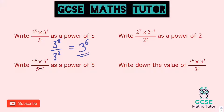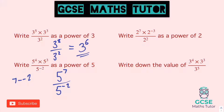Five to the power of four times five to the power of three is five to the power of seven. And we're dividing that by five to the power of negative two. So we've got a negative power on the bottom — I'm going to subtract these powers. So the sum for the power is seven take away the negative two on the bottom, and seven take away negative two is seven plus two, which is nine. So five to the power of nine.